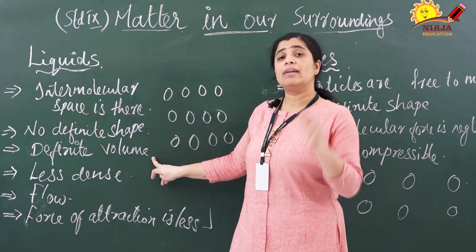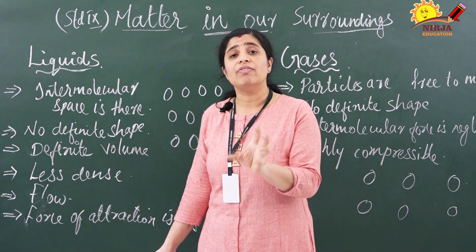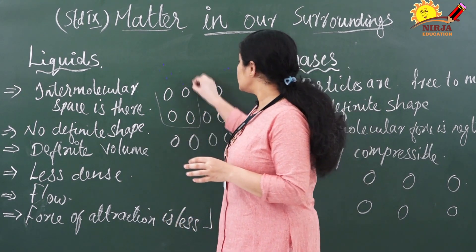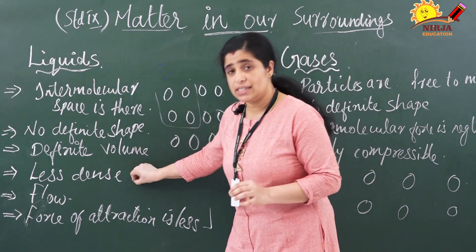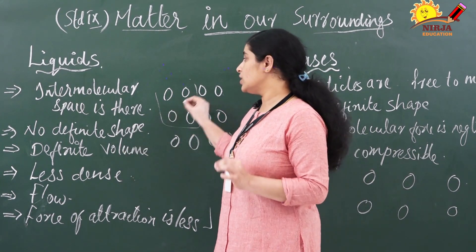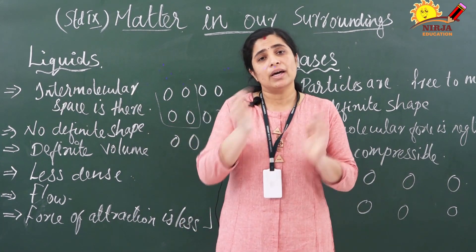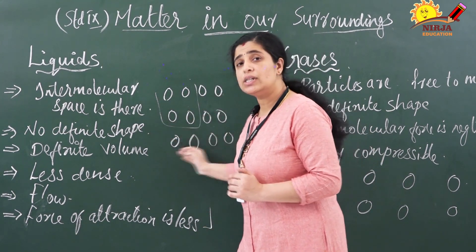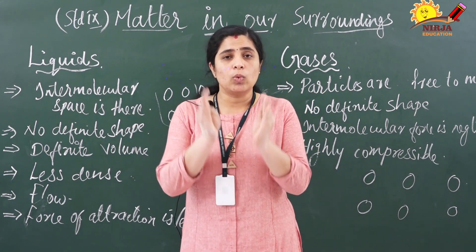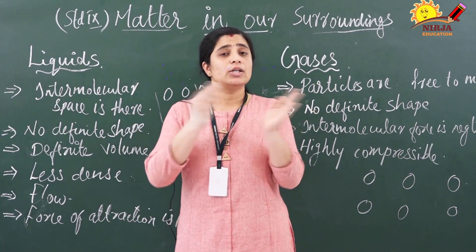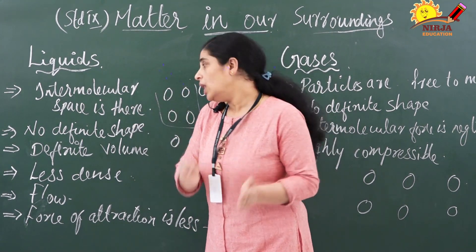The next point is that liquids do have definite volume. Even though they don't have definite shape, a unit space will still contain a fixed number of particles. However, the density of liquids is less compared to solids because the particles are arranged with spaces between them. So in a given volume, there are fewer particles than in solids.